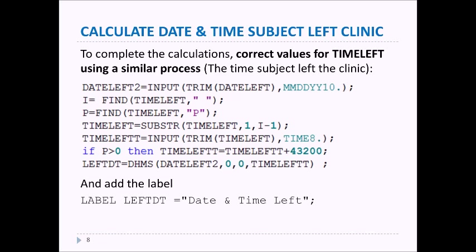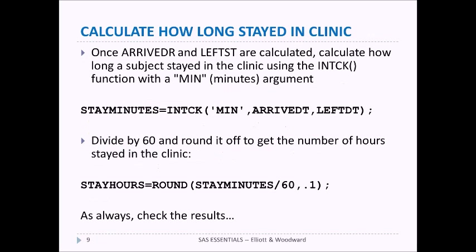To complete the calculations, we need to do the same thing for the time_left variable. Here's some code that does that — basically the same process as the previous example. Once we have that value, we can look at the difference between the arrive time and the left time, using the INTCK function with the 'min' argument, which gives us the number of minutes between the two values.